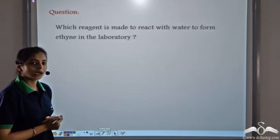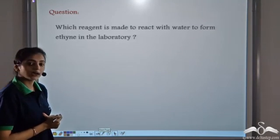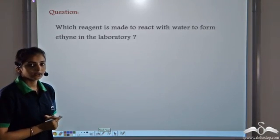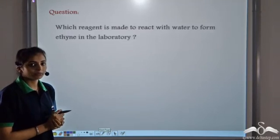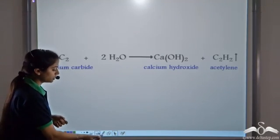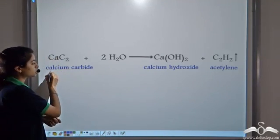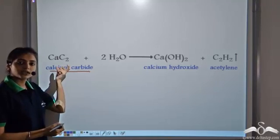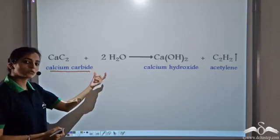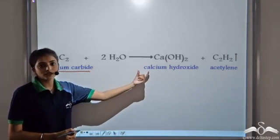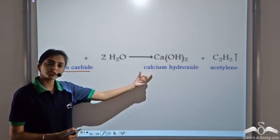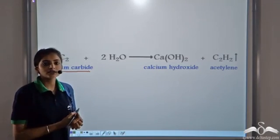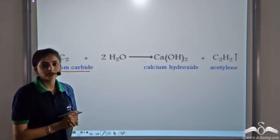Which reagent is made to react with water to form ethyne in the laboratory? During the laboratory preparation of ethyne, we use a reagent known as calcium carbide. When CaC2 or calcium carbide reacts with water, it forms a white colored compound known as calcium hydroxide, and a combustible gas, that is ethyne or acetylene, is released.